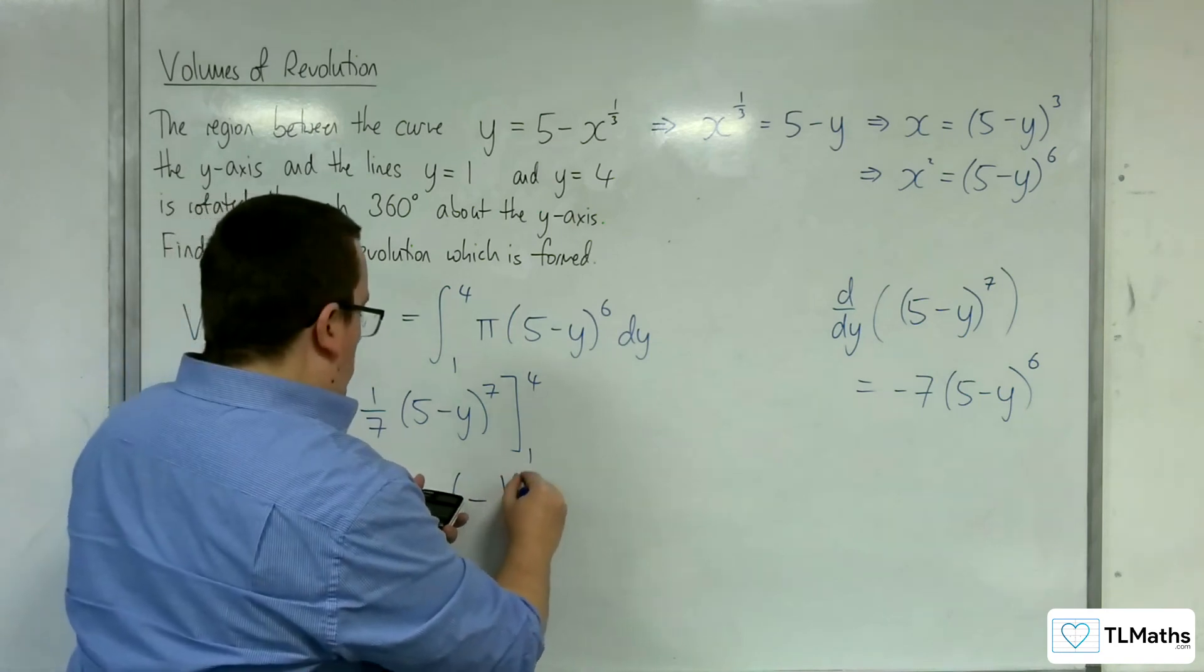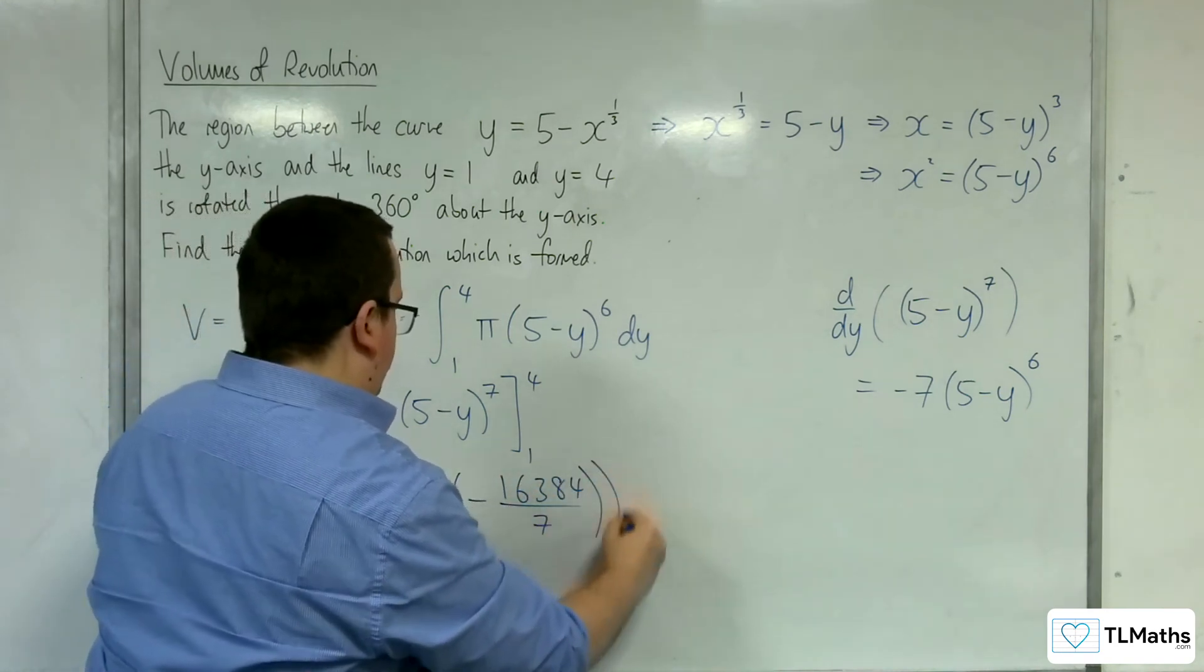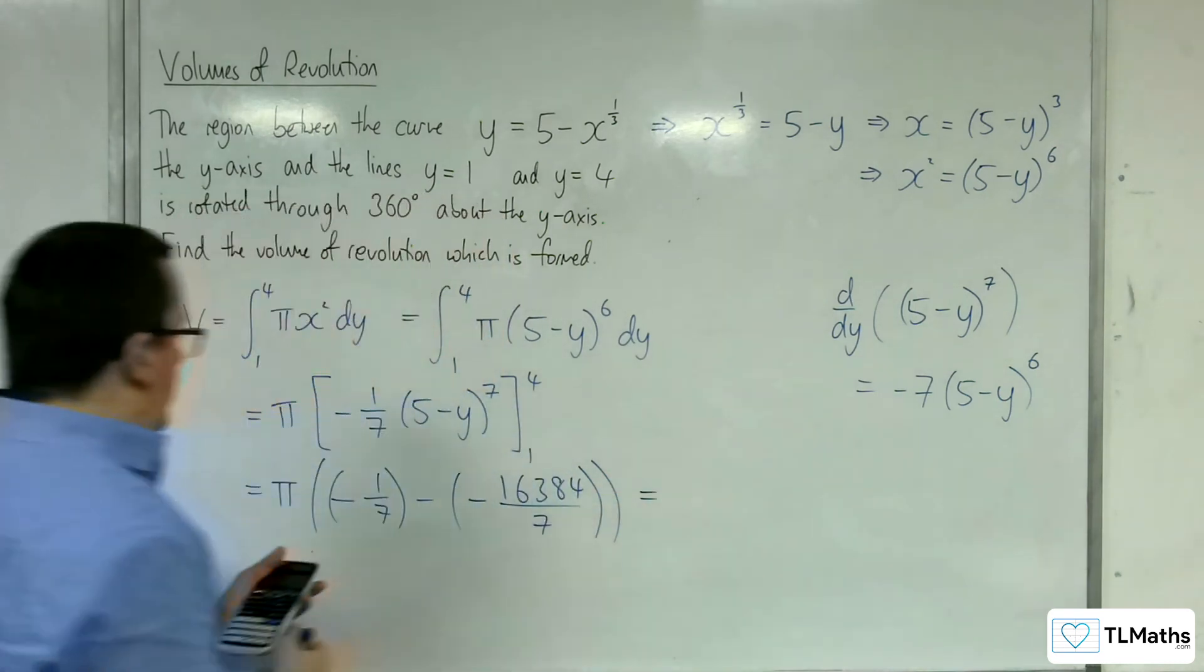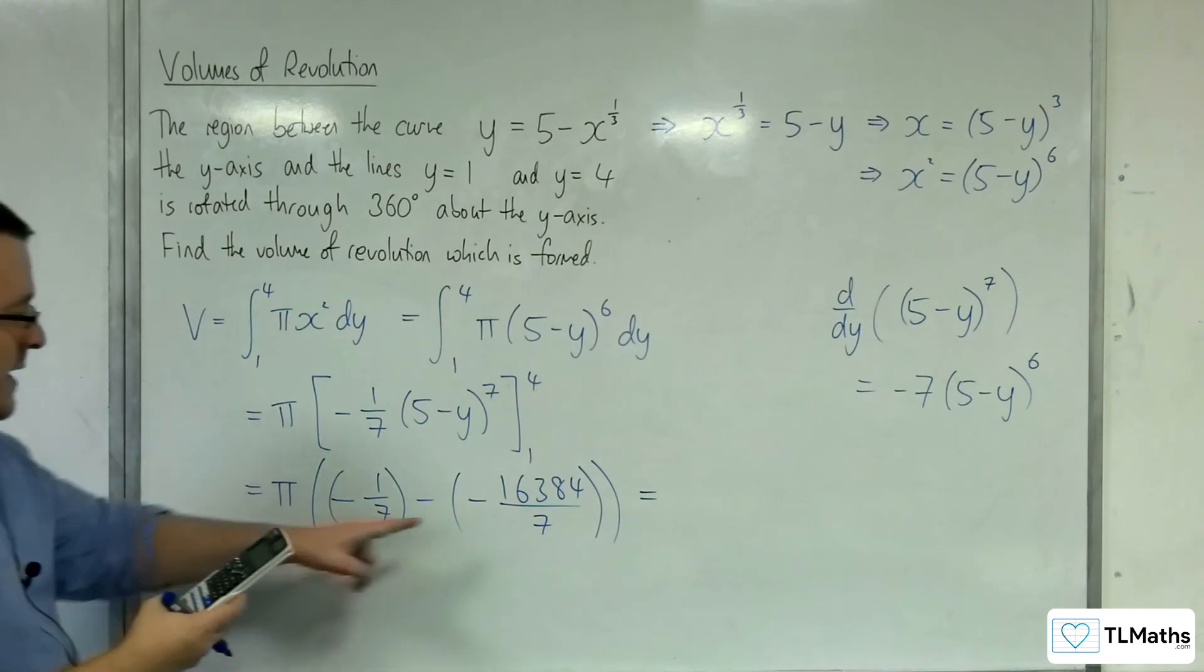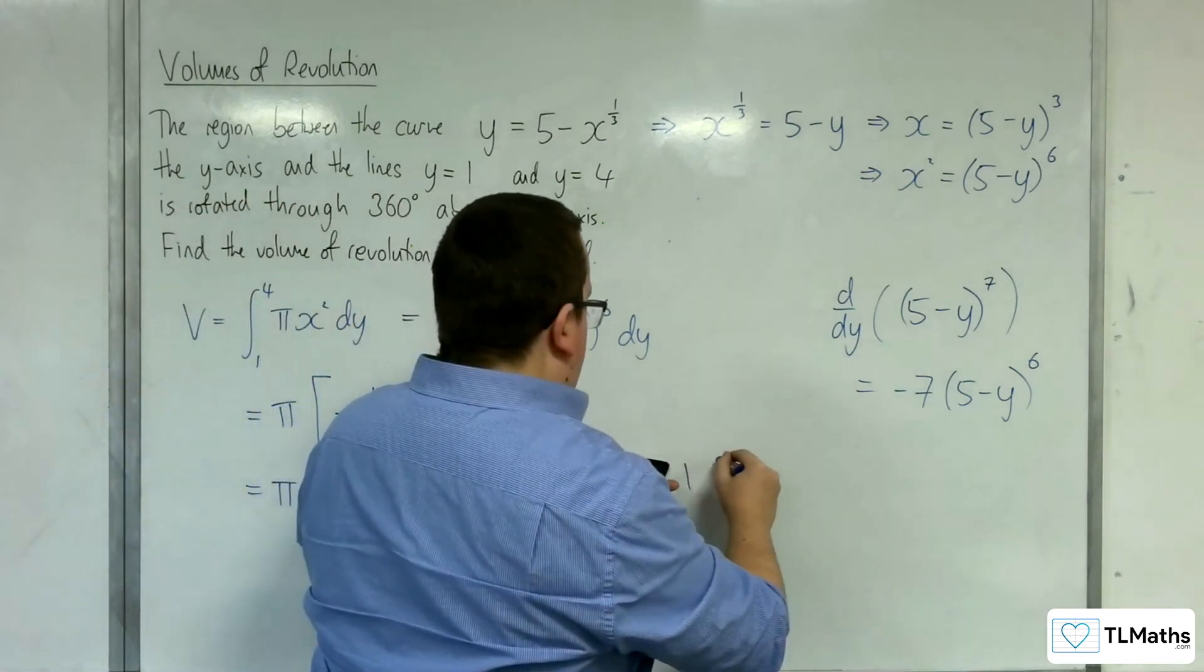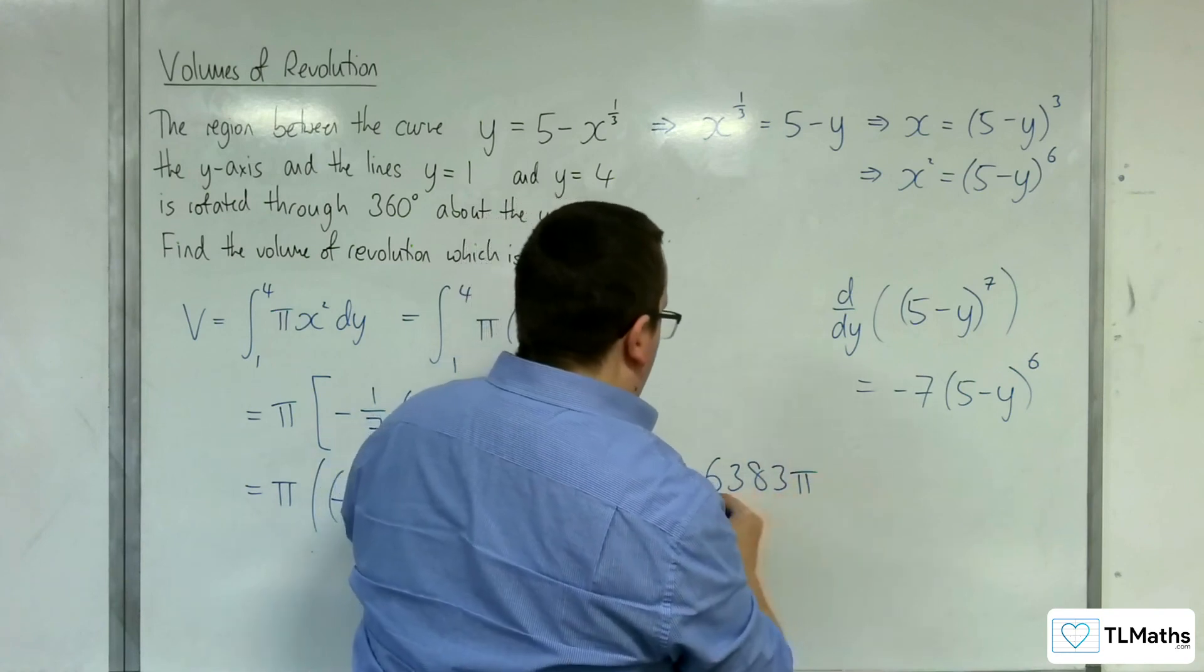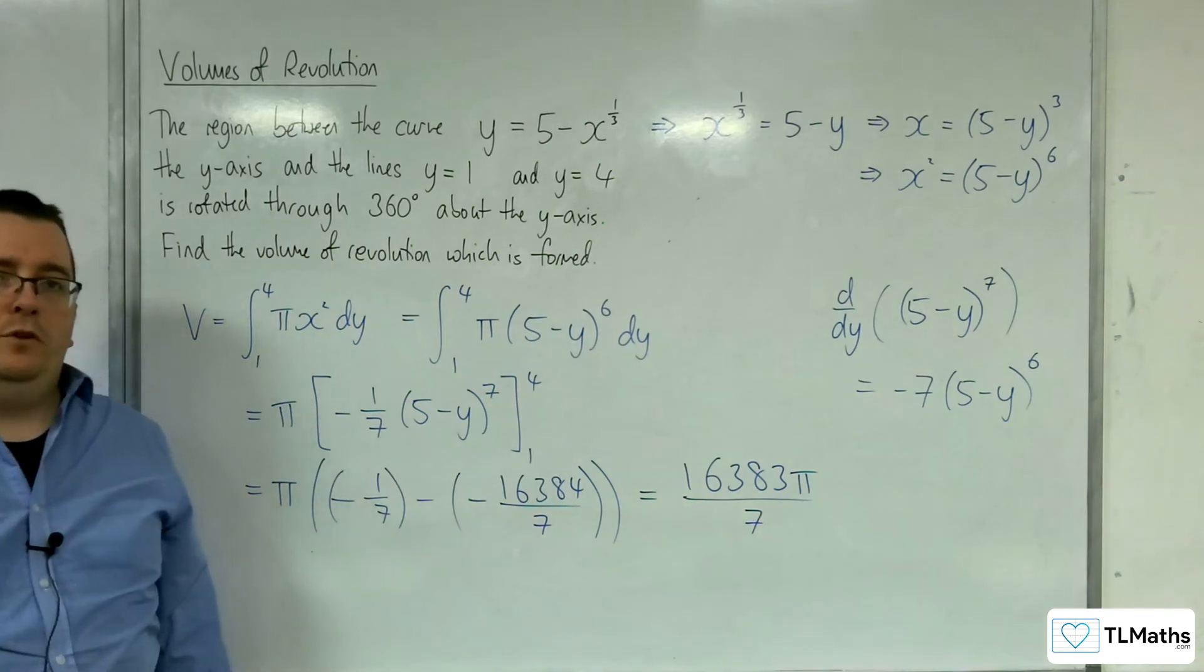So that's minus 16,384 over 7. Like that. So minus 1 seventh take away that, times by pi, will get us 16,383 pi over 7. And so that is the exact value I'm looking for.